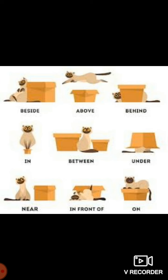In the next picture, the cat is in the box. In the next, it is between two boxes. In the next, it is under the box. In the next, it is near — there is some space between the cat and the box, so it is near the box. In the next, it is in front of the box. In the last picture, the box is closed and the cat is sitting on the surface of the box, so we use 'on': the cat is sitting on the box.